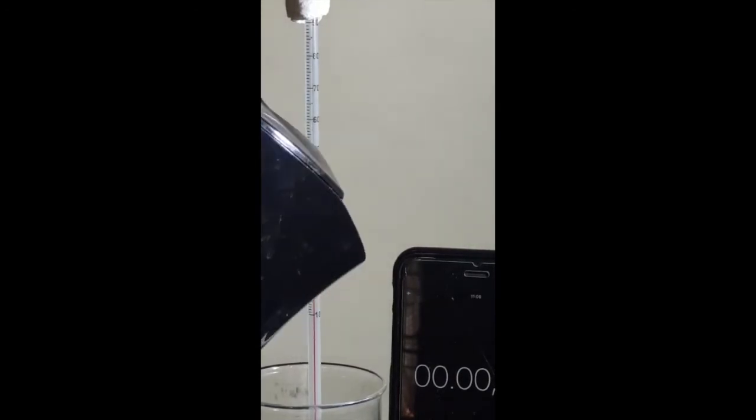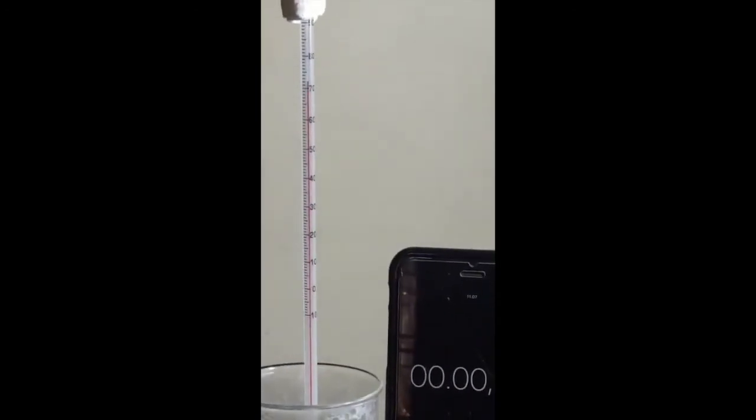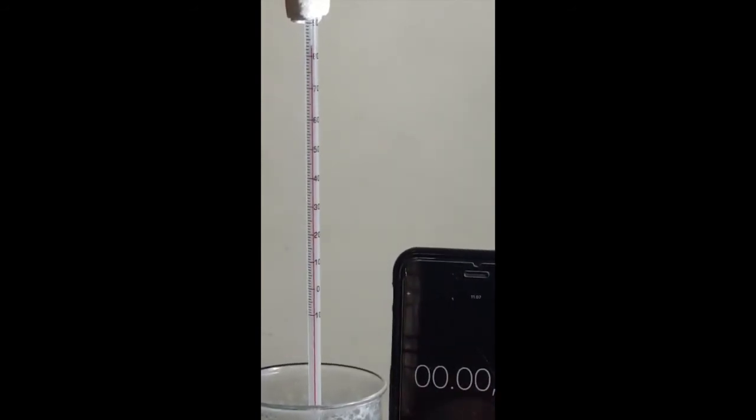Next, we will pour 200 cm³ of hot water into the beaker and record temperature theta at zero seconds. Make sure the rise of the alcohol level has completely stopped before measuring. After measuring the initial temperature, immediately start the stopwatch.